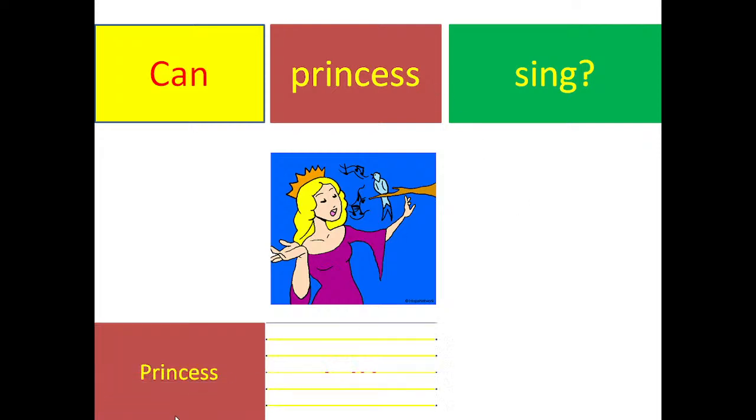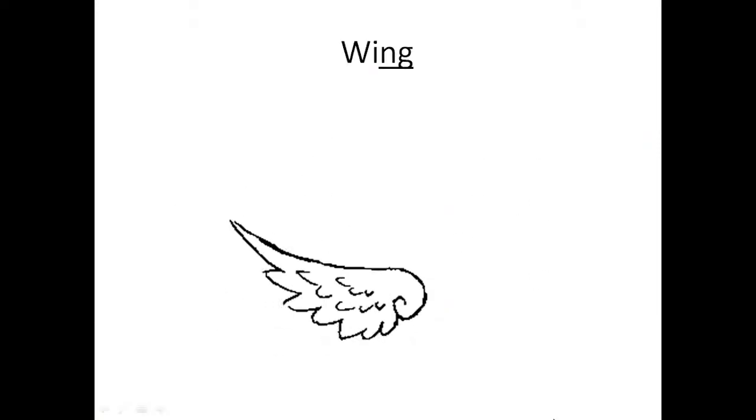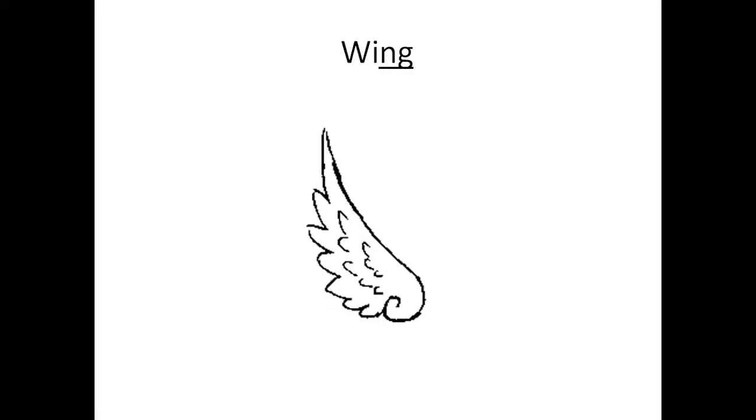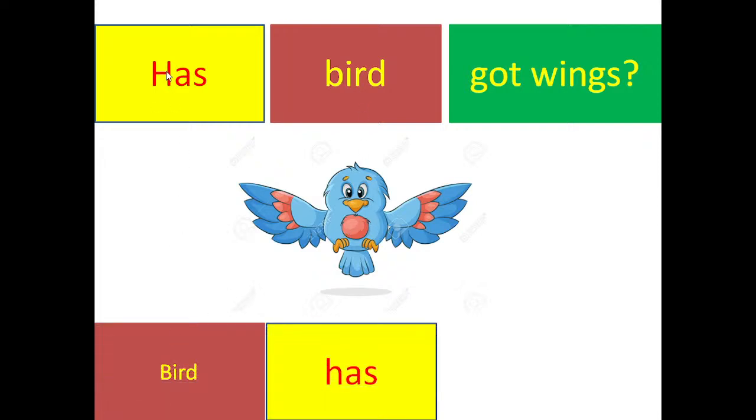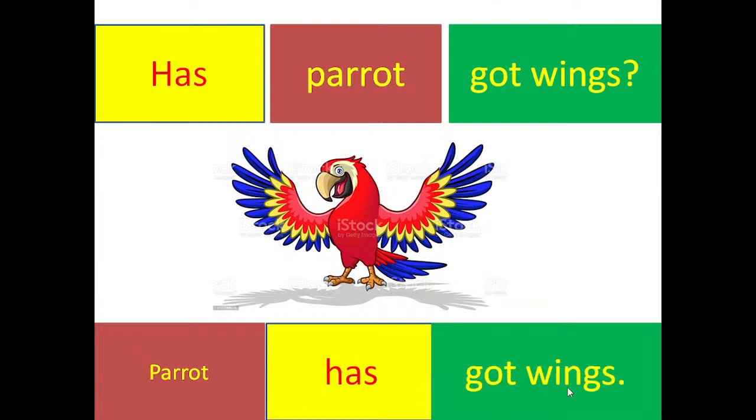Next word: wing, wing. Answer the questions. Has bird got wings? Yes, bird has got wings. Has parrot got wings? Yes, parrot has got wings.